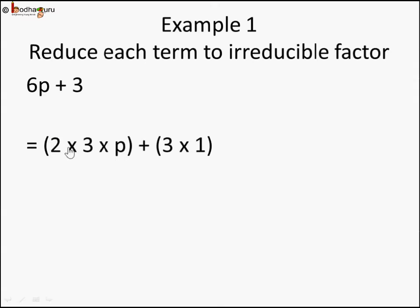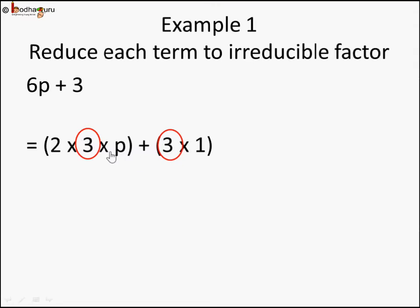So 6p is 2 into 3 into p, and 3 is 3 into 1. What are the common things you can see between these two terms separated by the plus sign? We see 3 is common. 2 is not in the second term, p is not in the second term, so 3 is the only common thing between the two terms.